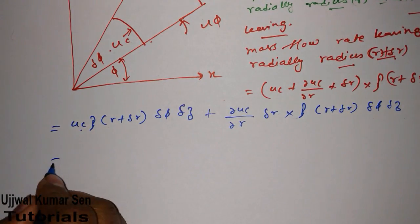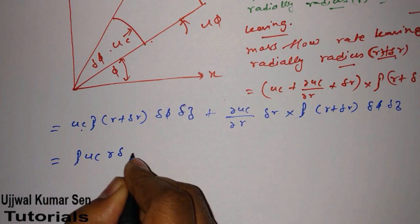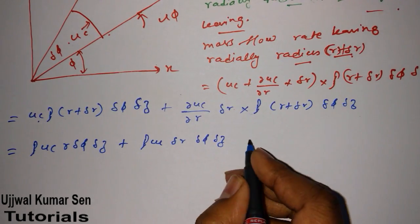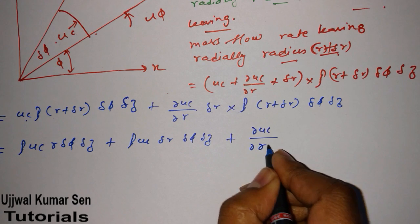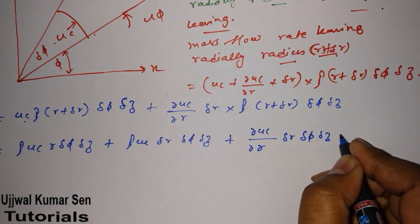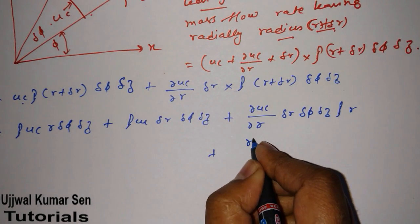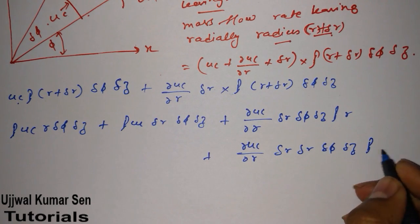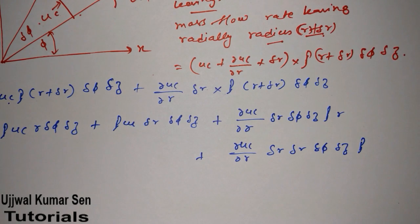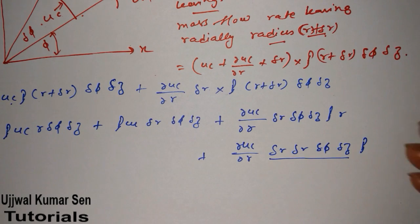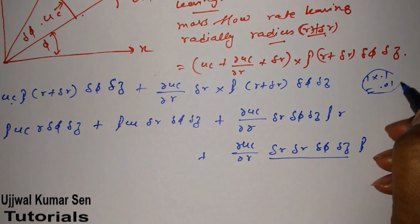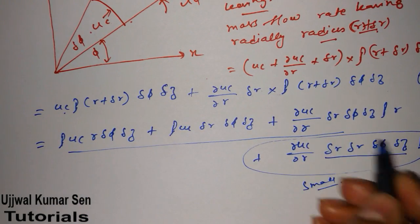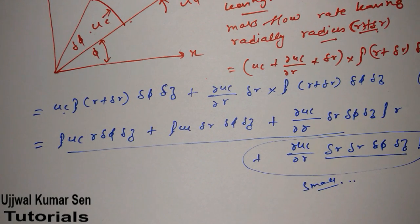We get: ρ · u_c · r · δφ · δz, plus ρ · u_c · δr · δφ · δz, plus ∂u_c/∂r · δr · δφ · δz · ρ · r, plus ∂u_c/∂r · δr · δr · δφ · δz · ρ. Now, the last term is quite small — if you multiply 0.1 by 0.1, it becomes even smaller — so we neglect that higher-order term and consider only the first three terms.